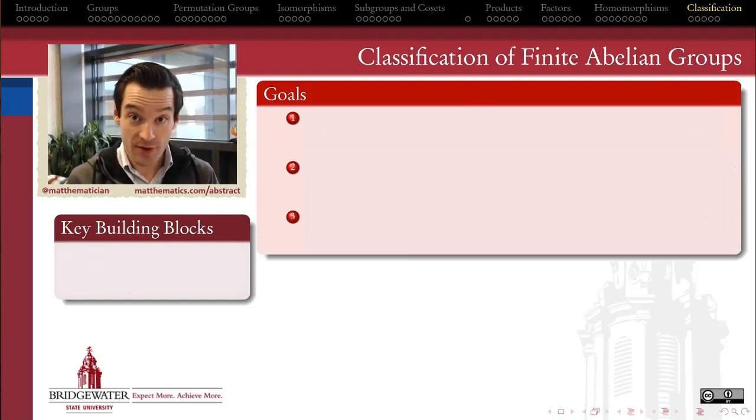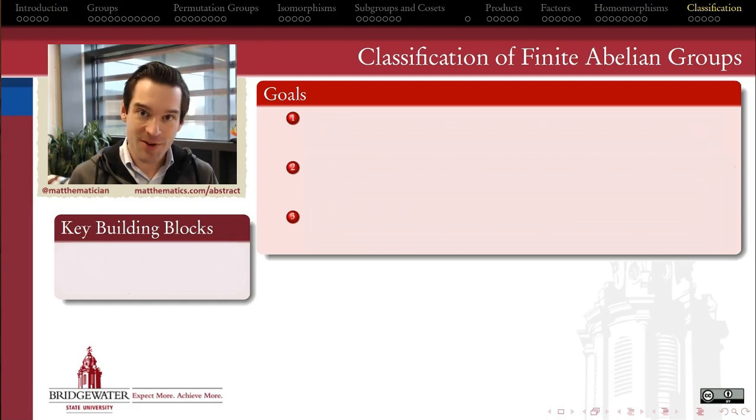Once we learned what a group was this semester, our first inclination was to do what mathematicians typically do, which is to say: alright, we've defined a thing, now what kinds of things are there out there in the universe? What kinds of groups can exist? How many different, essentially different kinds of groups can there be? And what we found over the course of this semester is that's a pretty nuanced question to answer.